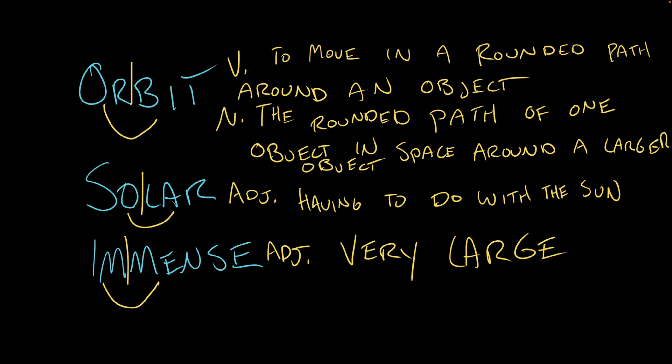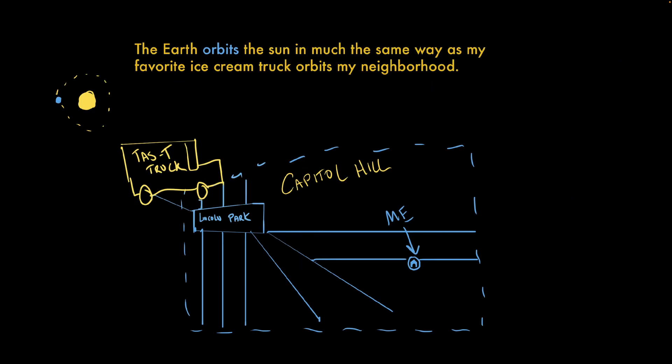Let's use these words in some sentences. The earth orbits the sun in much the same way as my favorite ice cream truck orbits my neighborhood. The truck drives in circles around my neighborhood, much like the earth moves in a rounded path around the sun. The difference being that the earth doesn't drive. It's old enough to have a license, but it simply chose not to get one and I respect that. Also, this is not where I actually live. Nice try. Next sentence.